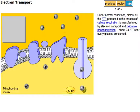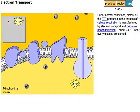Under normal conditions, almost all the ATP produced in the process of cellular respiration is manufactured by electron transport and oxidative phosphorylation, about 34 ATPs for every glucose consumed.